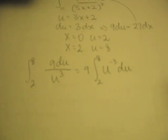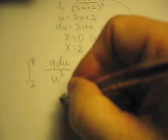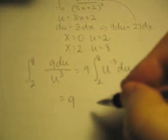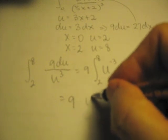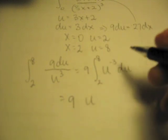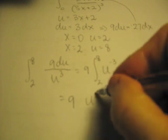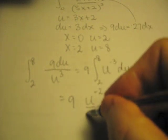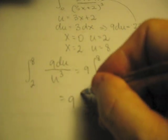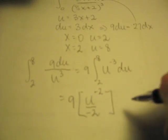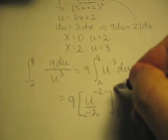We can now apply the power rule for integration to this, and I'd end up with 9. Now remember, the power rule says that I would add 1 to the exponent, so negative 3 plus 1 would give me negative 2. And then I must divide by the negative 2. And then I'm going to evaluate this between 2 and 8.